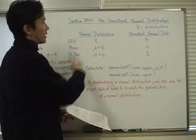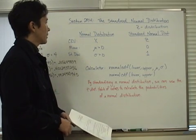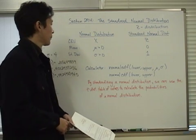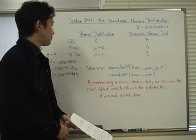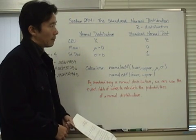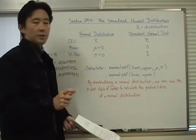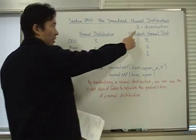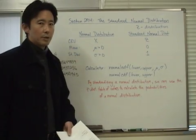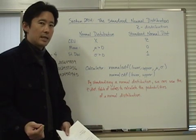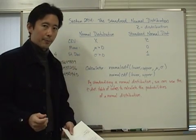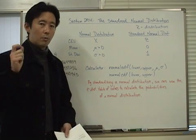Looking at the normal distribution curve, the continuous random variable is described by x, the mean is a positive number, and the standard deviation is also a positive number. Now, for the standard normal distribution — often called the z distribution — the continuous random variable used is not x, but z. For the standard normal distribution curve, the mean is always zero, and the standard deviation is always one.